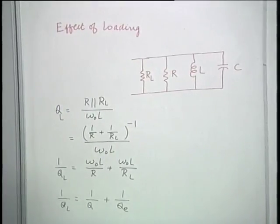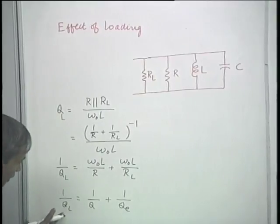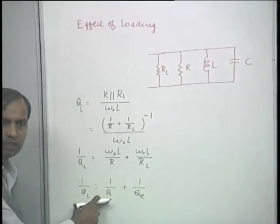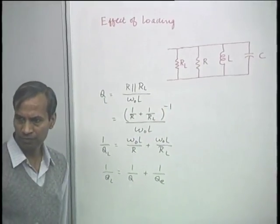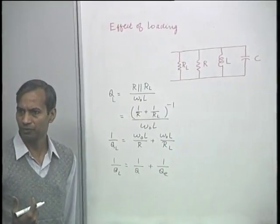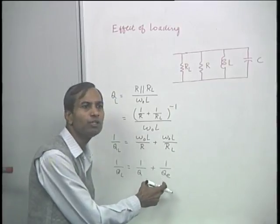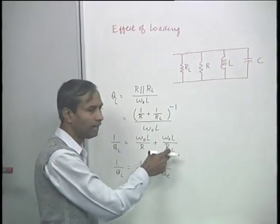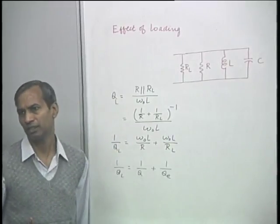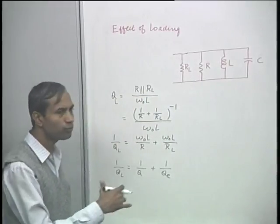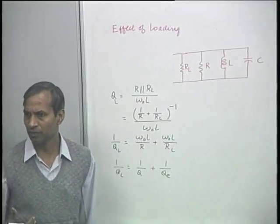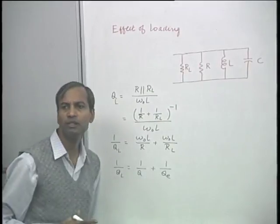The loaded Q and the unloaded Q can be measured by measuring the resonant frequency and the frequency separation between the 3 dB points. Therefore, the characteristics of the loading R_L, due to whatever reasons, can be determined. When resonators are used for testing materials or other checking purposes, this relation comes in very handy.